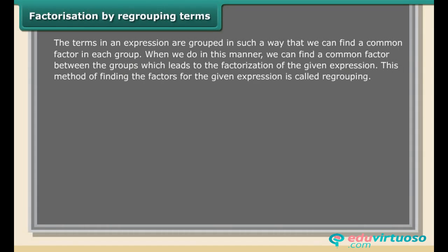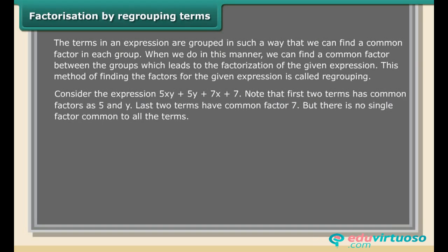Factorization by regrouping terms: the terms in an expression are grouped in such a way that we can find a common factor in each group. When we do this, we can find a common factor between the groups, which leads to the factorization of the given expression. Consider 5xy + 5y + 7x + 7. The first two terms have common factors 5 and y; the last two terms have common factor 7, but there is no single factor common to all terms.